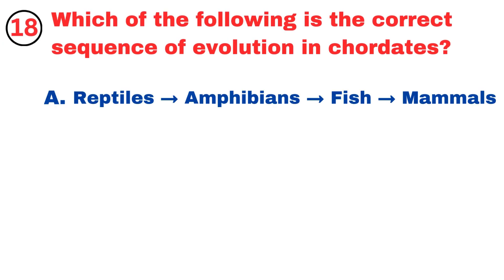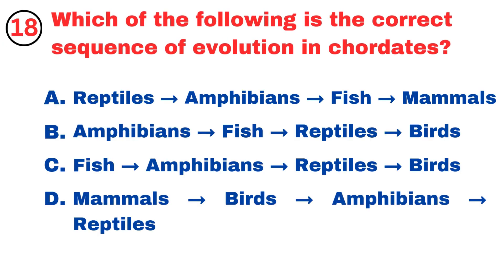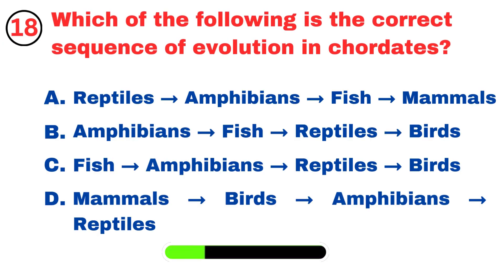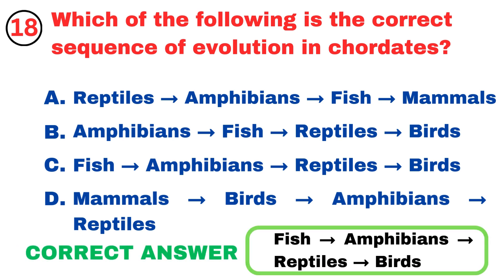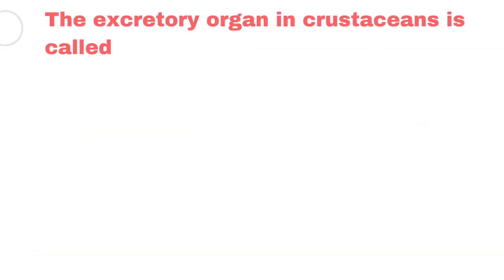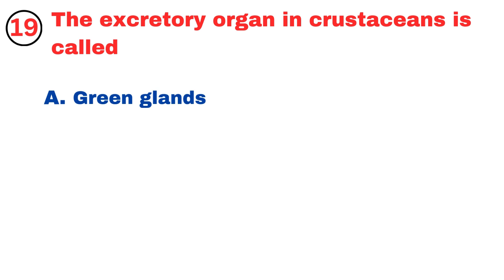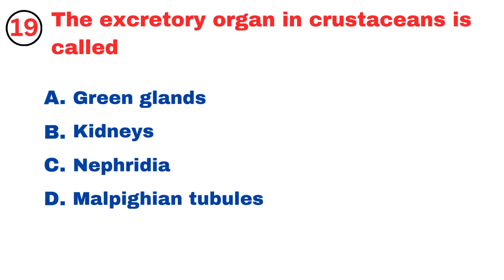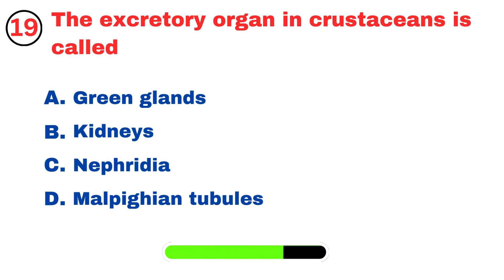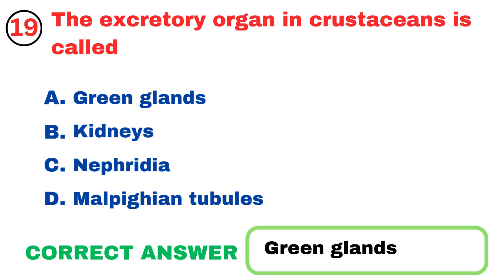Which of the following is the correct sequence of evolution in chordates? Fish, amphibians, reptiles, birds. The excretory organ in crustaceans is called? Green glands.